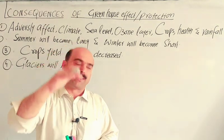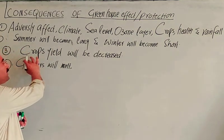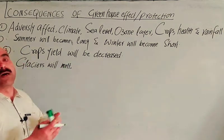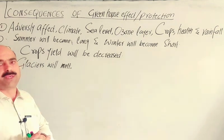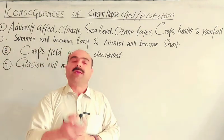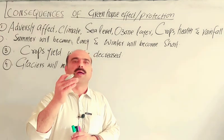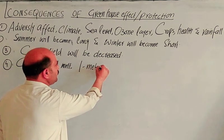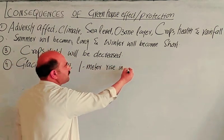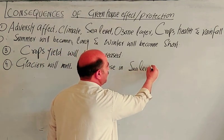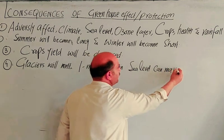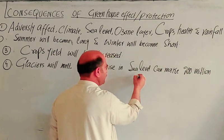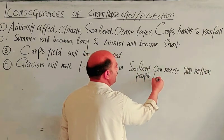When glaciers melt, the sea level will rise. The deposition of small stones, clay, and sand from melting glaciers will also raise the sea level. One meter rise in sea level can make 200 million people homeless.